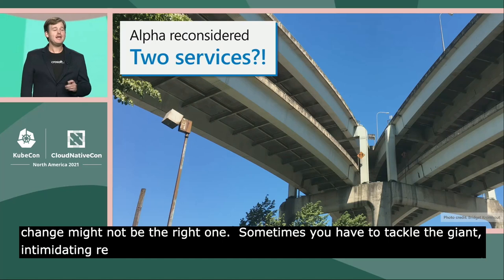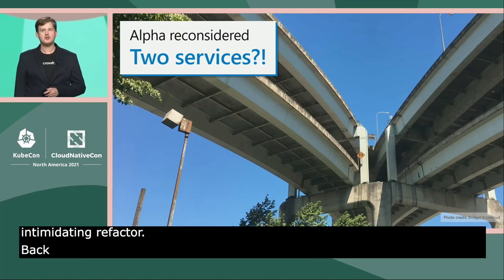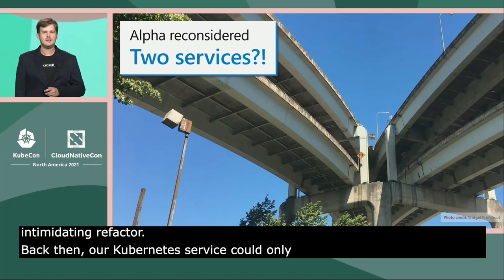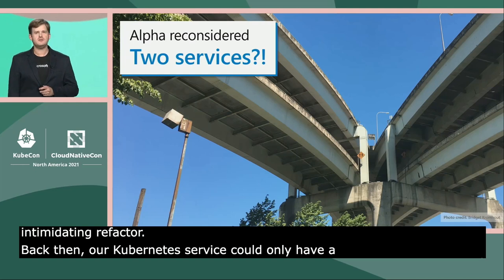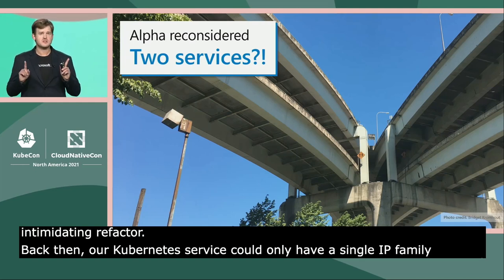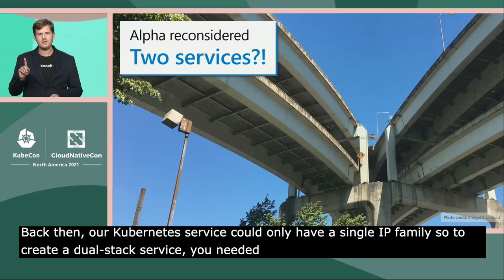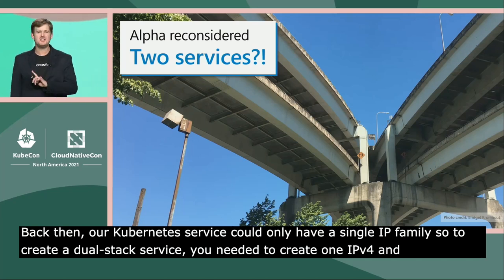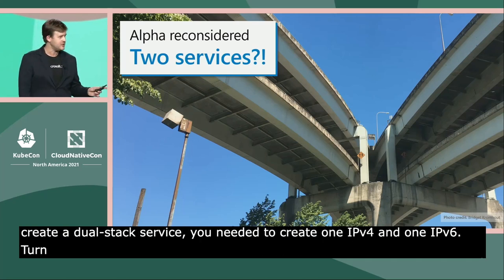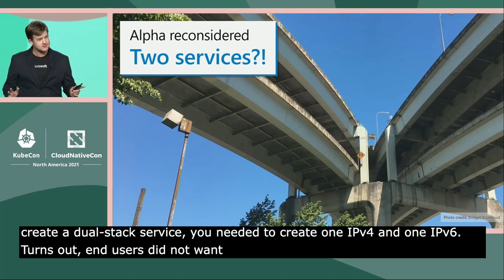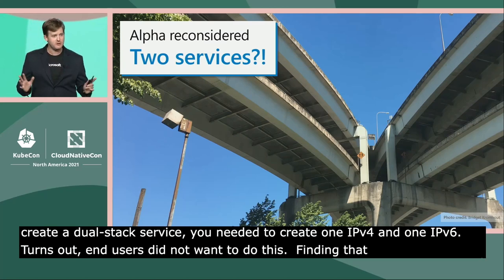Back then, a Kubernetes service could only have a single IP family. So to create a dual stack service, you needed to create two services — one IPv4 and one IPv6. Turns out end users did not want to do this. Finding that out early, well, that's the beauty of alpha.